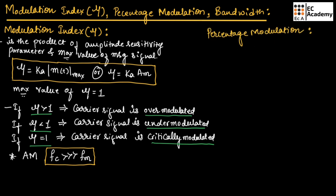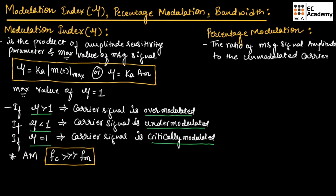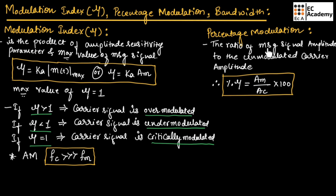Now let us see percentage modulation. The value of modulation index multiplied by 100 gives the percentage modulation. Percentage modulation can also be defined as the ratio of message signal amplitude to the unmodulated carrier amplitude. So, message signal amplitude divided by unmodulated carrier amplitude, multiplied by 100, gives percentage modulation. It can also be written as KA × Am × 100.